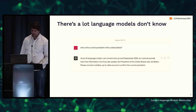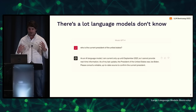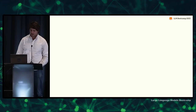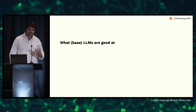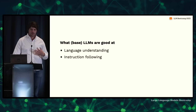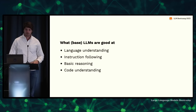There's really a ton that language models don't know. If you go into ChatGPT, even GPT-4, and ask who's the president of the United States, it's not going to be able to tell you. Language models are really good at language understanding, following instructions, basic reasoning, and for many modern models, they're also very good at understanding code.